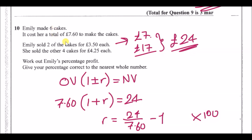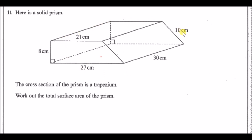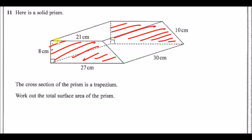Number 11: a solid trapezium prism — the cross-section is a trapezium on the front face, extending all the way across. Work out the total surface area. This shape is made up of two identical trapeziums — one at the front and one at the back — plus four rectangles: one slanted side, one on top, one on the back edge, and one on the ground.